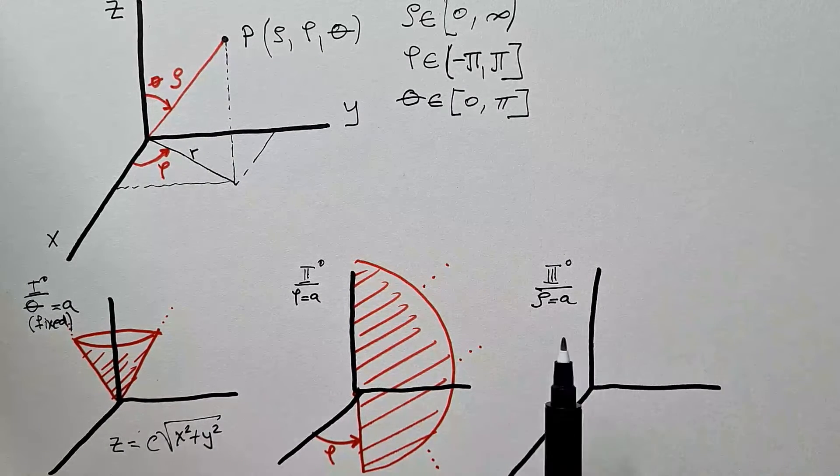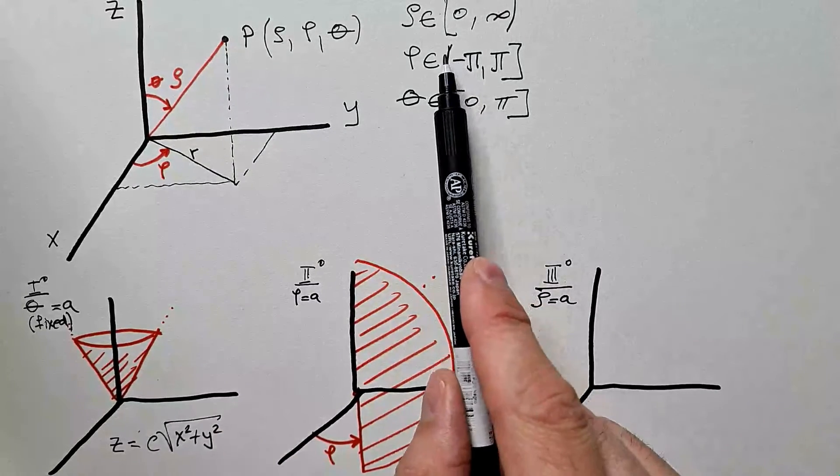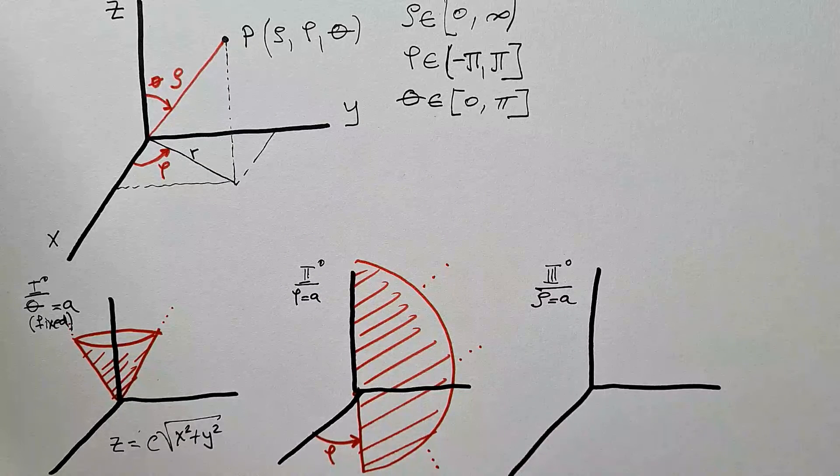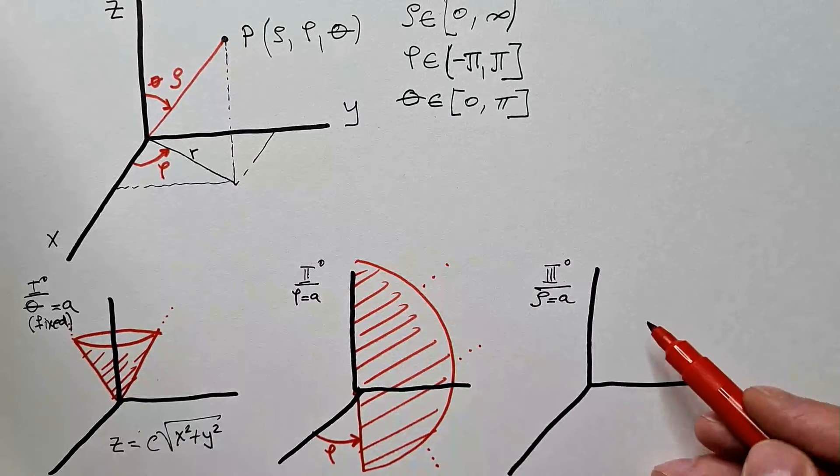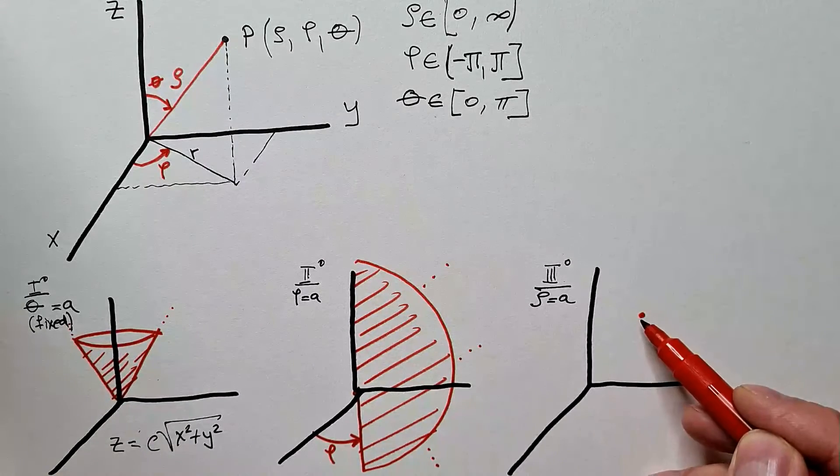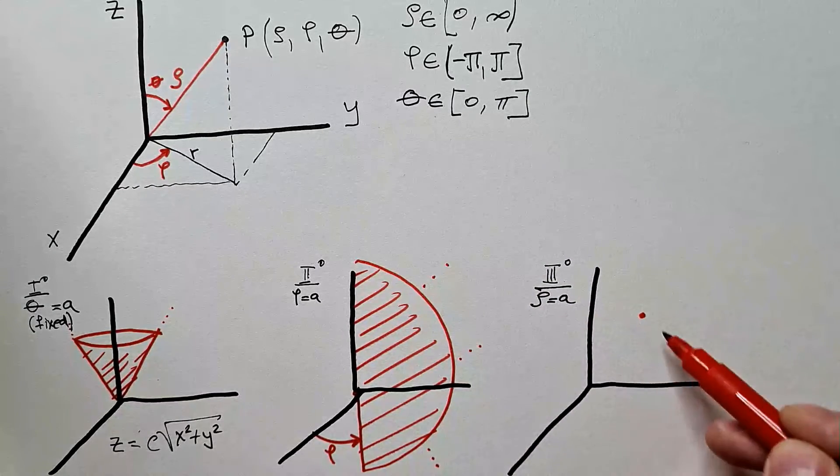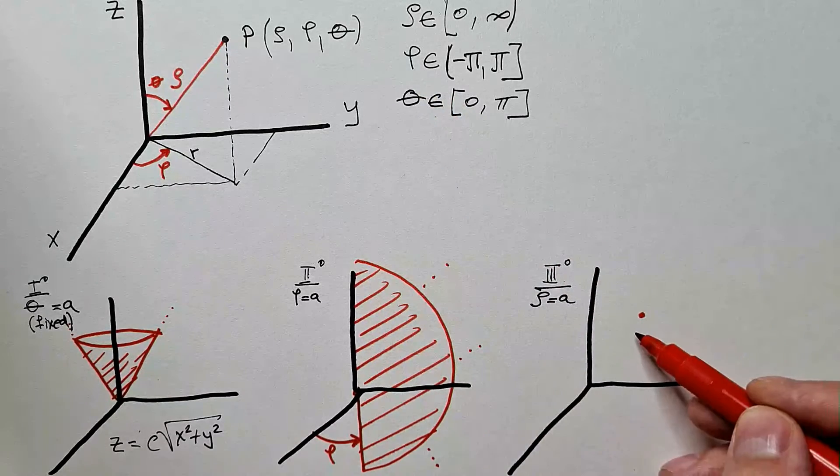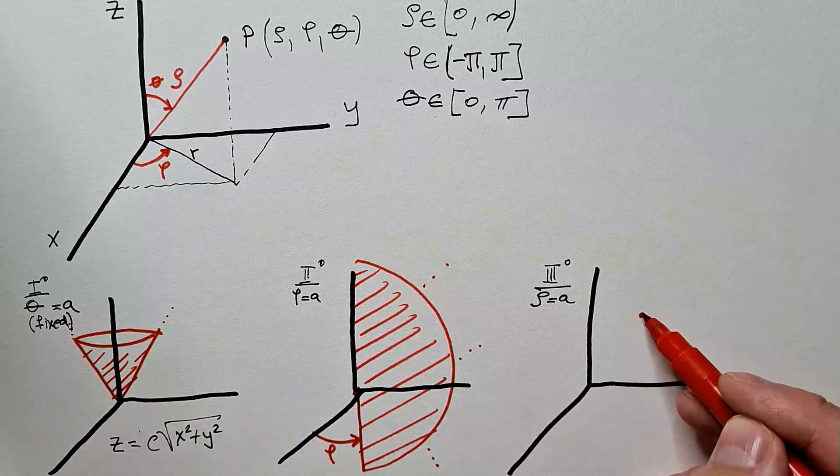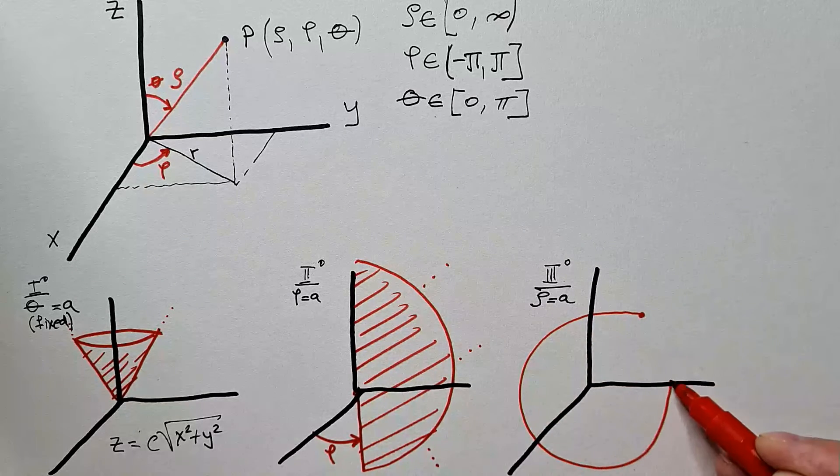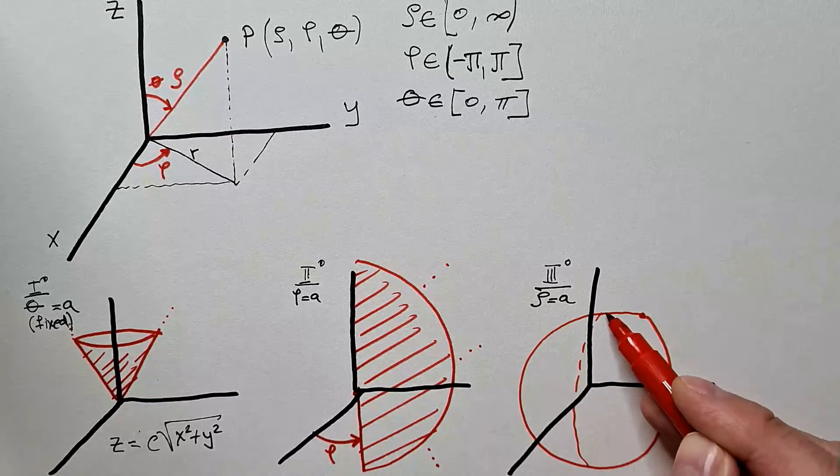Finally, the third case is when we fix rho, radius vector, to some value A, and we let the two angles freely move along their range. This is indeed the most interesting case. I vary theta between 0 and pi, and I vary phi from 0 to pi, and from 0 to negative pi. I simply get a nice sphere, and that's the reason we call this spherical coordinate system.